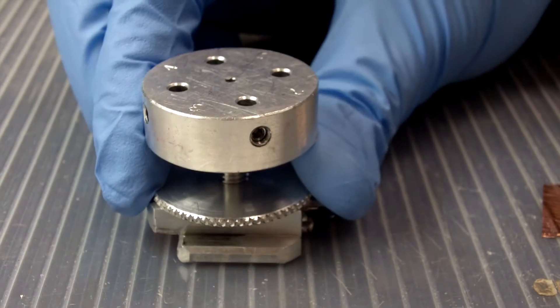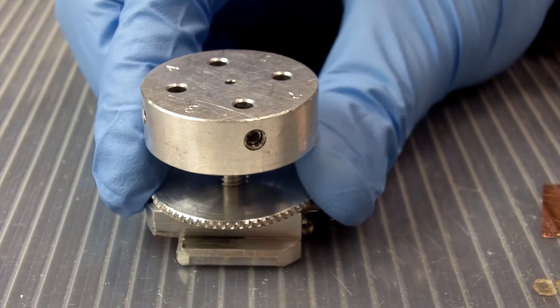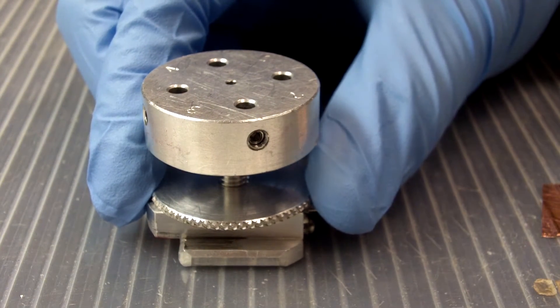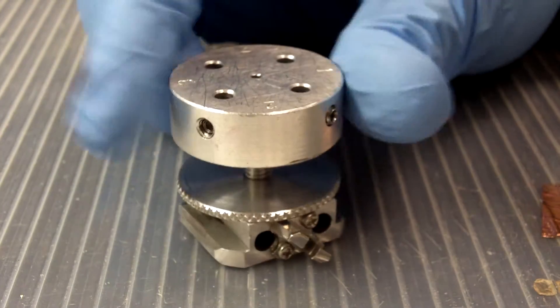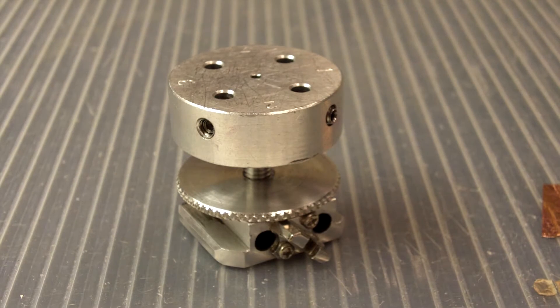I am, of course, talking about the sample holder for the Hitachi Field Emission SEMs. This is not difficult to understand and it is not difficult to use, so let's take a look now at how it's supposed to be used and the many ways it's not supposed to be used.